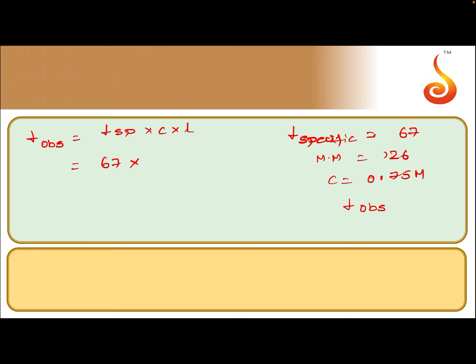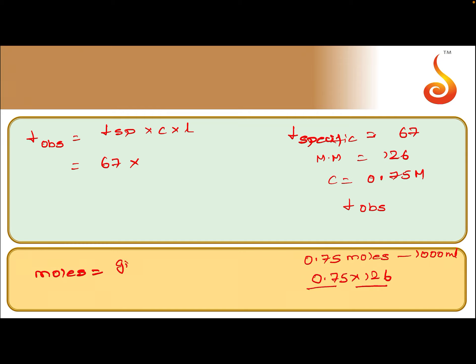Now I will explain the concentration. 0.75 molar means 0.75 moles present in 1000 ml. Given mass divided by molar mass is number of moles, so molar mass multiplied by number of moles gives the given mass. Molar mass is 126, and molarity is 0.75.